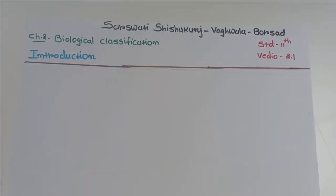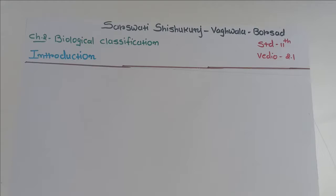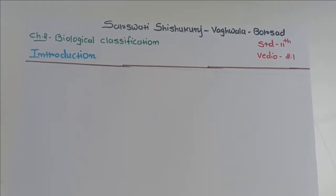Hello students, welcome to the biology world. Today we are starting the second chapter in this unit of diversity of living organisms, and that is biological classification. We need to have some historical background about how this classification system actually evolved and which one is used right now. In the first chapter we already discussed why classification is needed and how it is used.